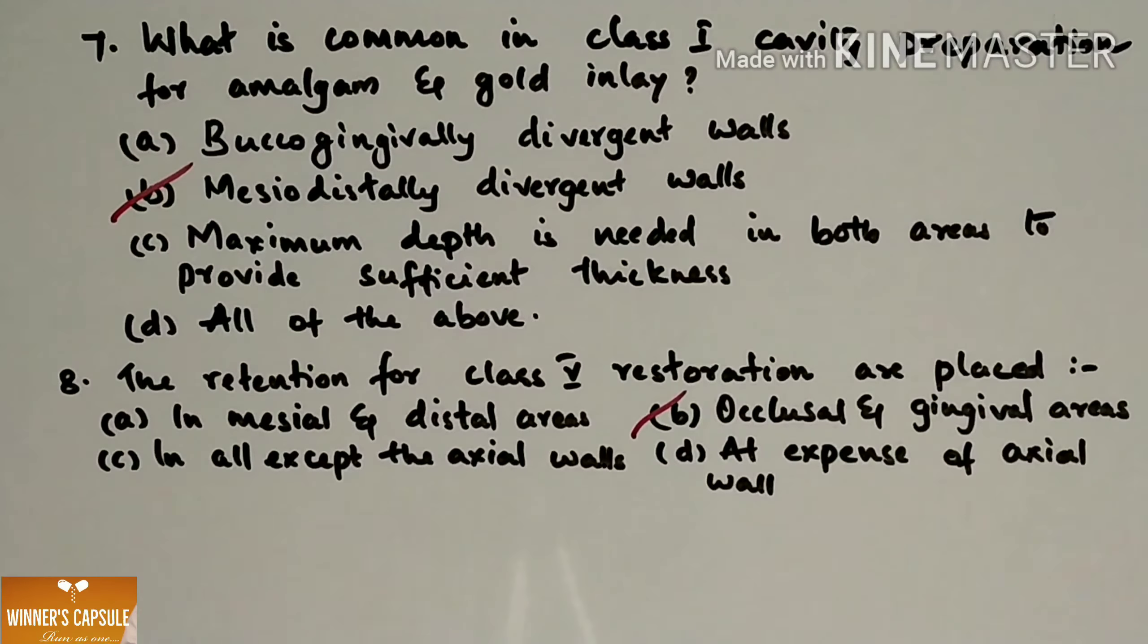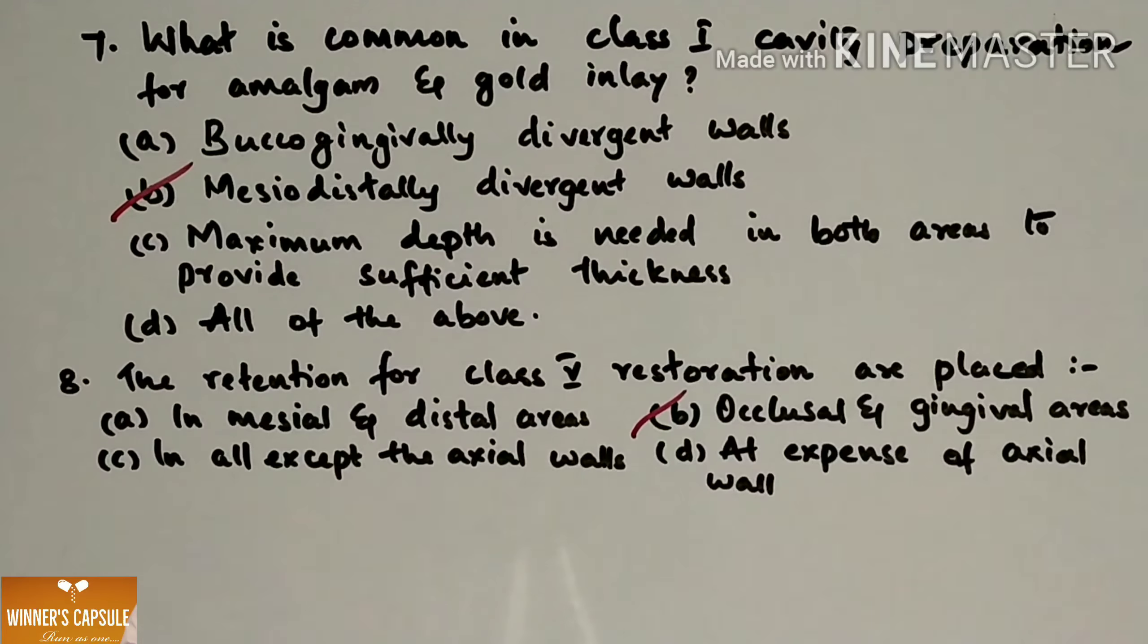According to GV Black's classification, class 5 is known as restorations on the gingival third of the facial or lingual surface of all teeth. Retention is provided in the occlusal and gingival areas. For class 2 tooth preparation, retention grooves are located in the buccoaxial and linguoaxial line angles. For class 3, it is in the axial gingival line angles. For class 5, it is occlusal and gingival axial line angles.